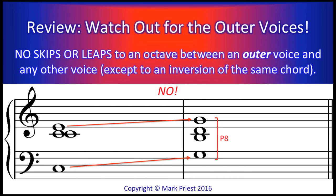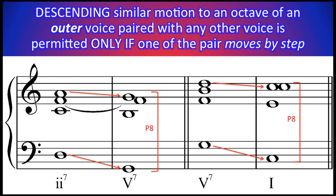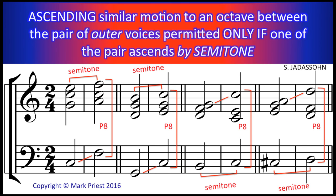In summary, proper movement between chords a fourth or fifth apart can be assured by remembering these simple principles pertaining to hidden octaves. The outer voices — bass and soprano — must be carefully watched. Skips or leaps in the same direction by both an outer voice and any other voice into an octave, whether up or down, are forbidden except to inversions of the same chord. Similar motion into an octave between an outer voice and any other voice is permitted ascending if one of the two voices moves by step; the other voice may either skip or leap into the octave. Similar motion into an octave between both outer voices is permitted ascending, but only if one of them ascends by a semitone, not by a whole tone, into that octave.